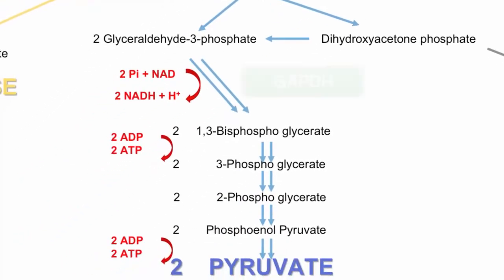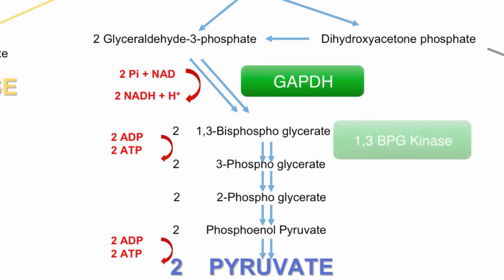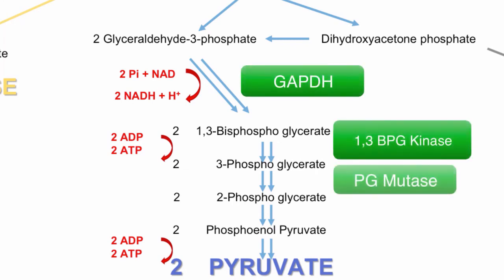The next few enzymes I will not read out but merely show them to you, to give an idea that every single reaction requires an enzyme to function at a useful speed. However, because none of these are rate-limiting enzymes like PFK, or starting enzymes like hexokinase and glycogen phosphorylase, we will not cover them as in depth.